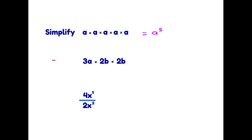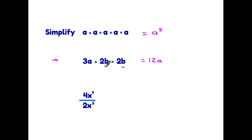In the second example we have letters and numbers, and the simple rule is: work through the numbers first, multiplying them as normal, then go through each of the letters usually alphabetically. So three times two is six, times two is twelve — the numbers work out as twelve. There is just one single a, so we write it in. Then we move on to the b's: there is a b here and a b here, so b times b is b squared, and our answer becomes 12ab².